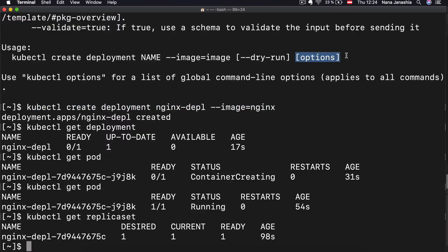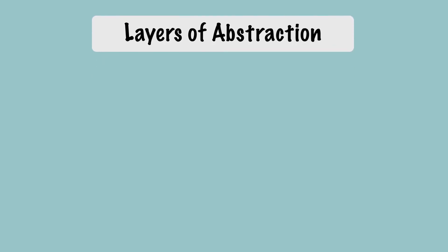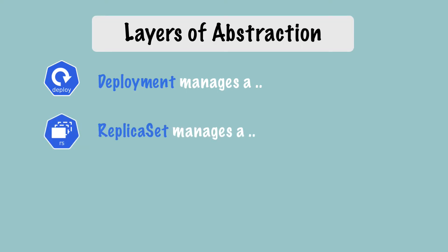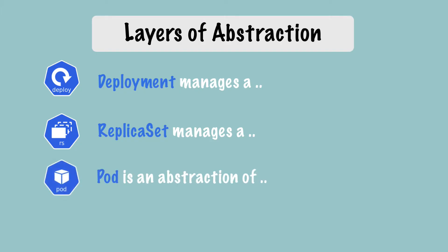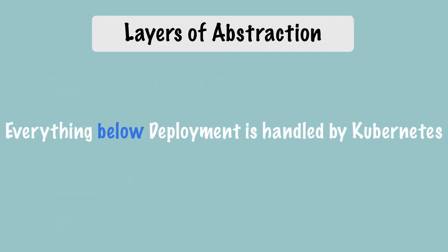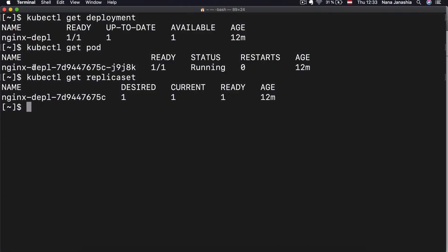In practice, you will never have to create, delete, or update a replica set directly. You're going to be working with deployments, which is more convenient because in a deployment you can configure the pod blueprint completely — how many replicas you want and the rest of the configuration. The layers work like this: deployment manages a replica set, a replica set manages all the replicas of that pod, and the pod is an abstraction of a container. Everything below the deployment should be managed automatically by Kubernetes. For example, the image it uses — you'll have to edit that in the deployment directly, not in the pod.